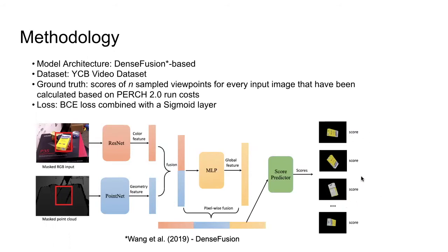For the training, we are using YCB video dataset. The ground truth annotation contains scores of n-sampled viewpoints for every input image that have been calculated based on PERCH 2.0 run costs. We use binary cross entropy loss combined with a sigmoid layer as loss function to measure the model error.